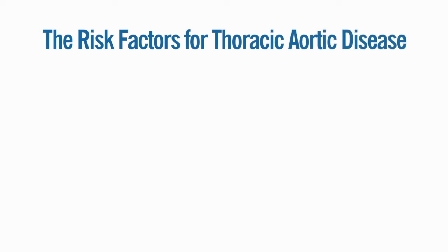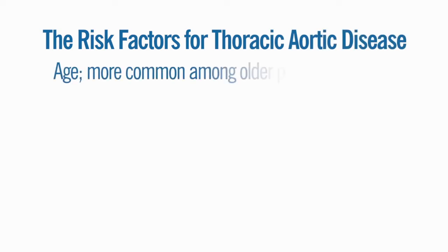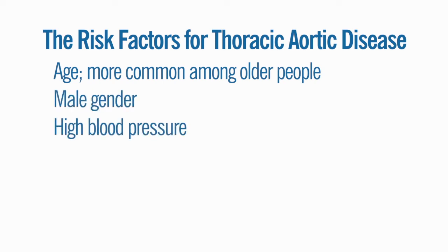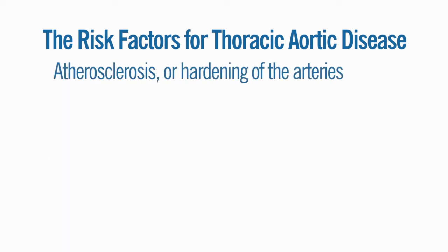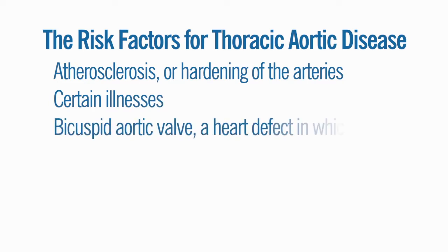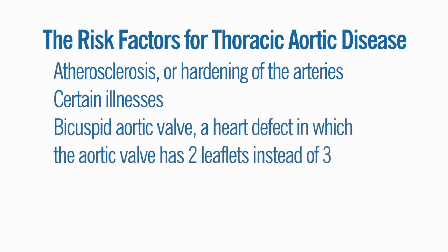The risk factors for thoracic aortic disease include age — aneurysms are more common among older people — male gender, high blood pressure, smoking, weight lifting, atherosclerosis or hardening of the arteries, certain illnesses, and having a bicuspid aortic valve, a heart defect in which the aortic valve has two leaflets instead of three.